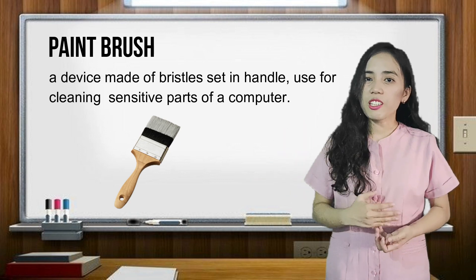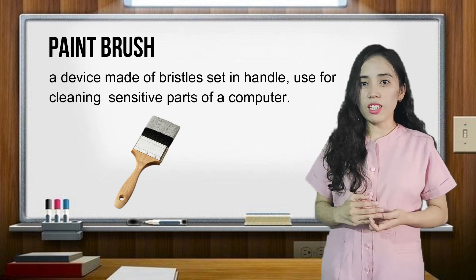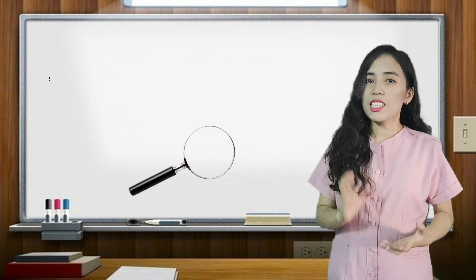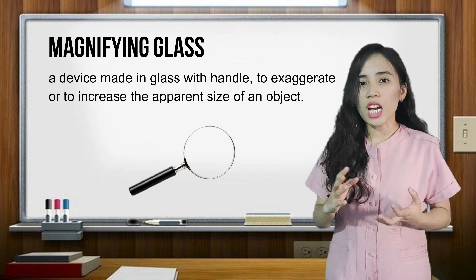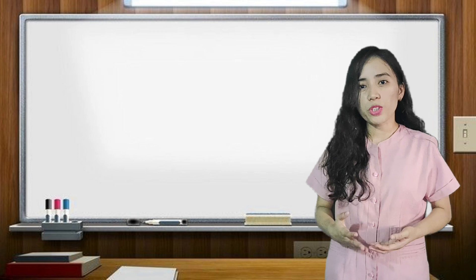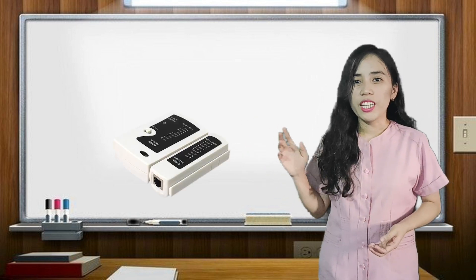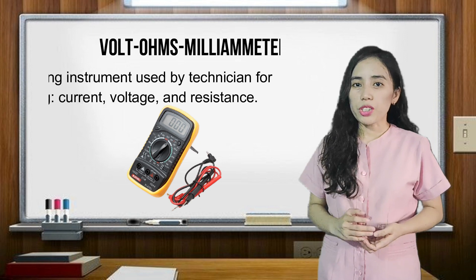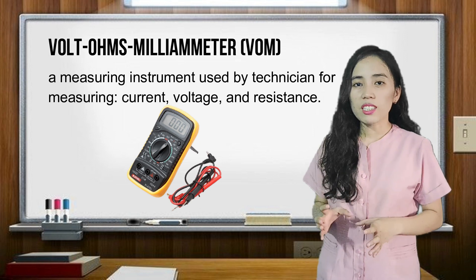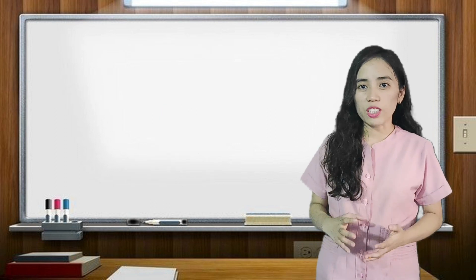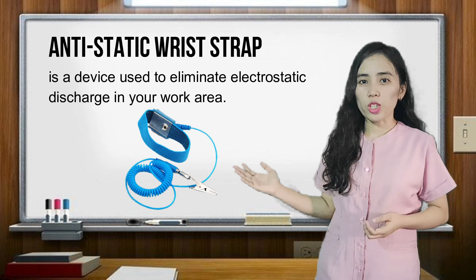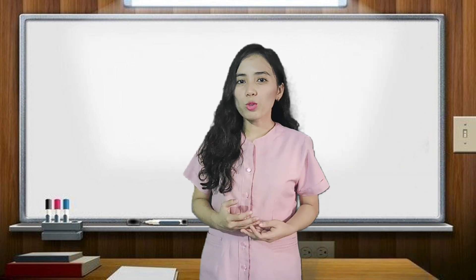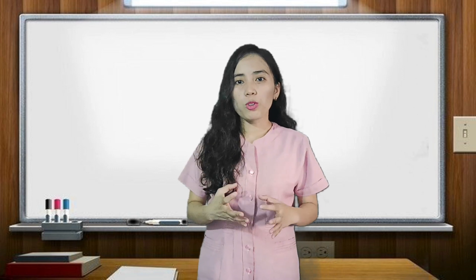Next, we have the paintbrush. It is a device made of bristles set in a handle that is used for cleaning sensitive parts of a computer. We also have the magnifying glass, a device made of glass with a handle used to exaggerate or increase the apparent size of an object. Next, we have the LAN tester, a device used to test the network connection. We also have the volt-ohm milliammeter, used for testing current, resistance, and voltage. And last, we have the anti-static wrist strap, used to eliminate electrostatic discharge in your work area. Those are the hand tools and testing equipment to make up your computer toolkit.